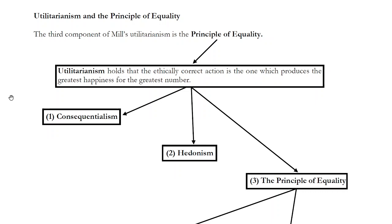The basic statement of utilitarianism is relatively straightforward, but it has various components we've been explaining. Utilitarians are consequentialists — they think that when evaluating an action, the only thing that matters is the consequence, the result, or the outcome of that action. The intention with which you act, your motive, how the action made you feel on the inside, what you had in your heart — none of those things matter from a moral point of view. If you're a consequentialist, all that matters is the outcome or the consequence.